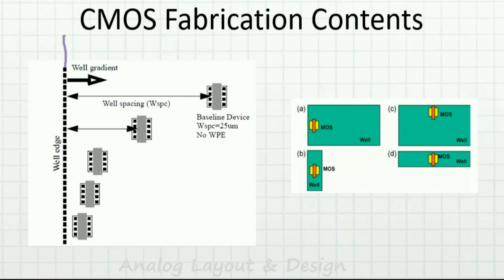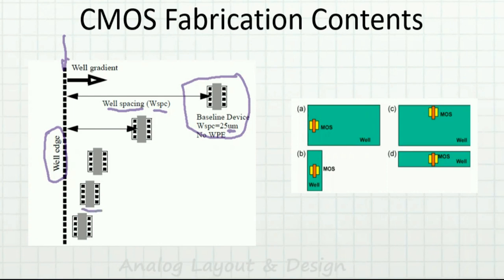Looking at this diagram, this is the well edge. Transistors can be placed at different distances from the edge of the well — this is the well spacing (WS). One device is placed very far from the well, with a well spacing of around 25 micrometers, whereas the other transistor is placed very close to the N-well edge. These two devices will not behave the same because of the well gradient.